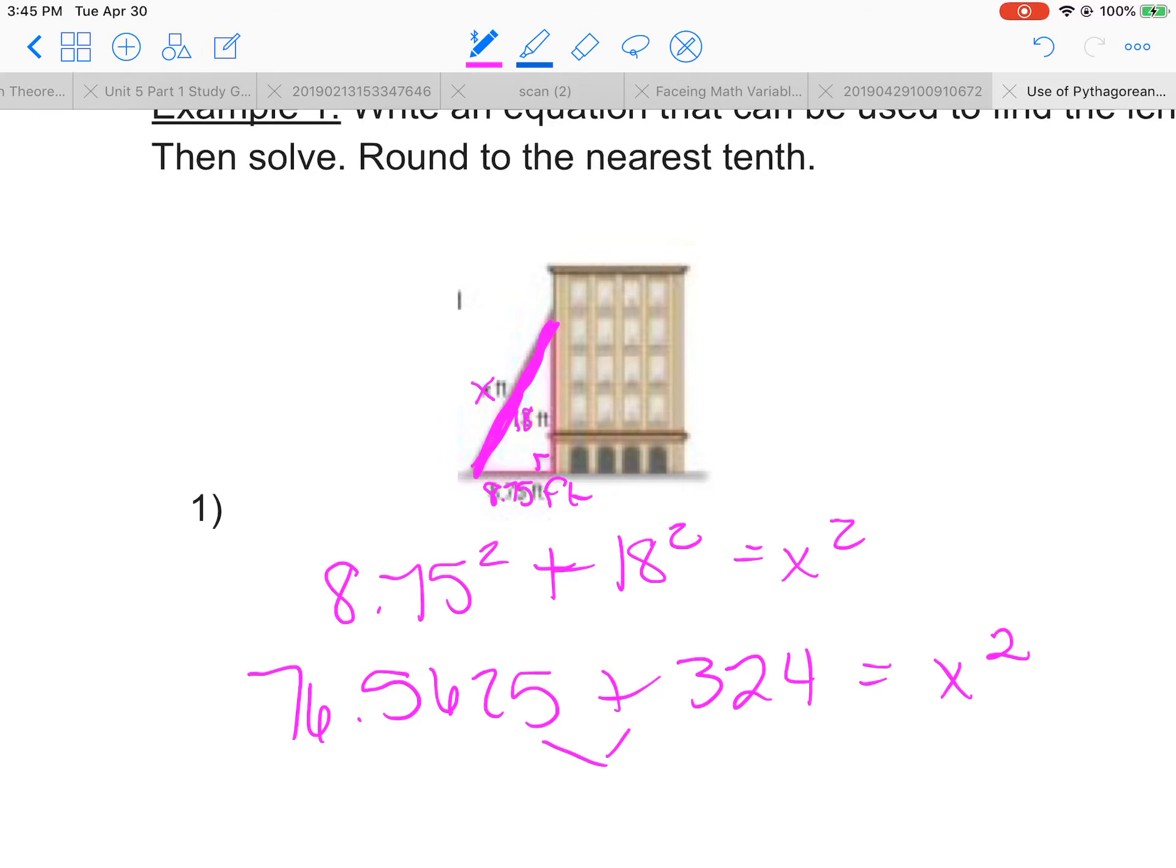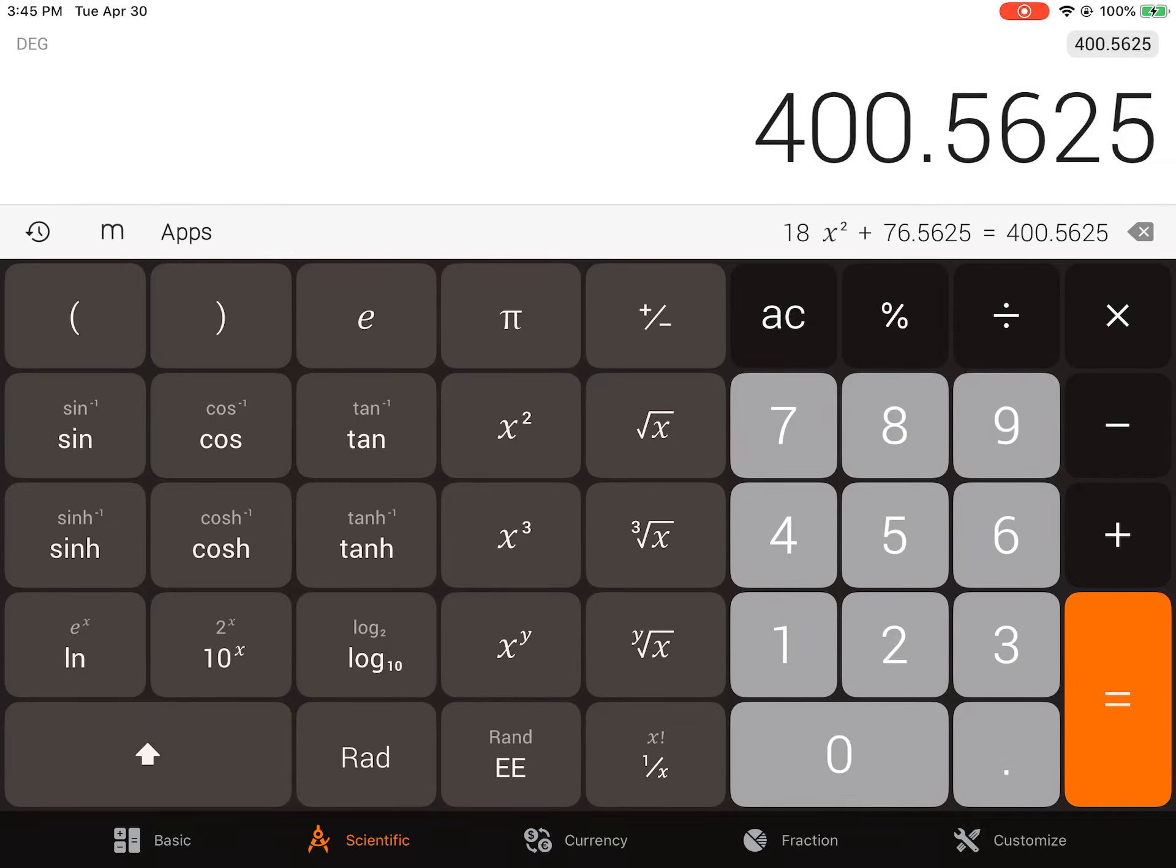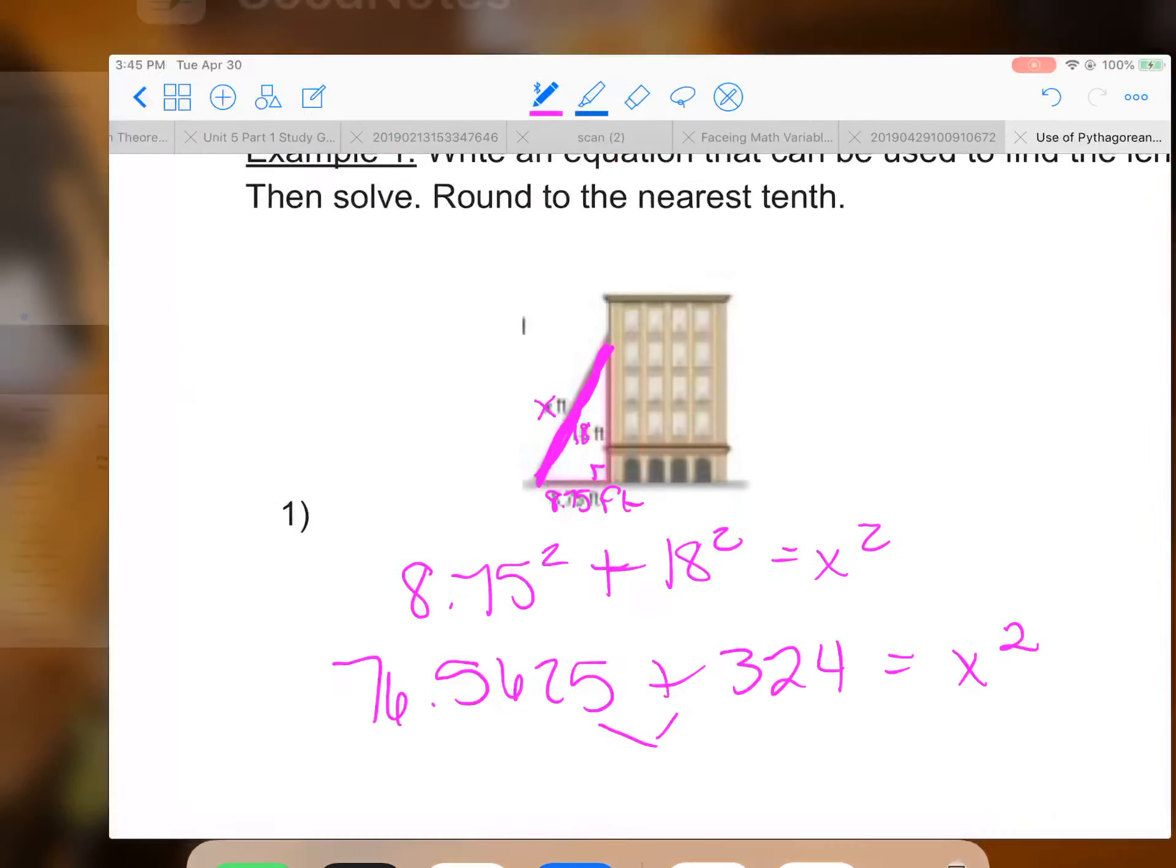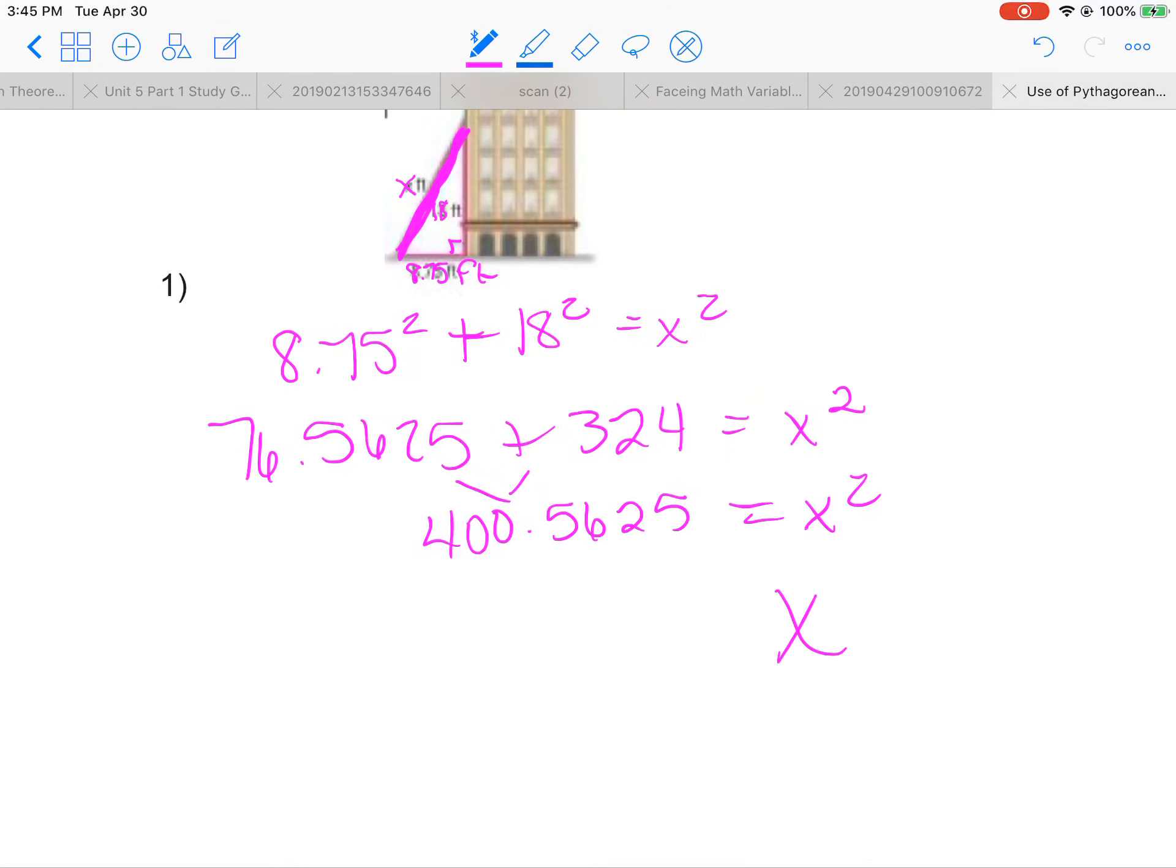So then we're going to add these two together: 324 plus 76.5625 equals 400.5625 equals x squared. So to solve that, we need to take the square root.